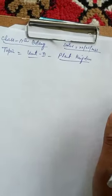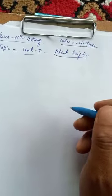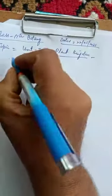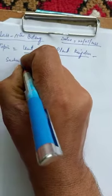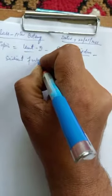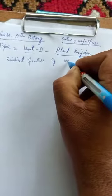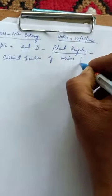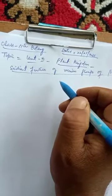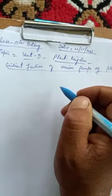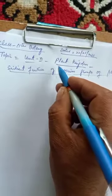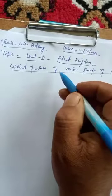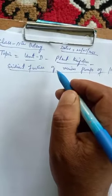The first aspect of this Plant Kingdom is the salient features of various groups of plants. We have to study the salient features of various groups of plants. But before we take up the salient features, let us first have an idea about the various groups of plants — we must know what are the various groups before studying their salient features.